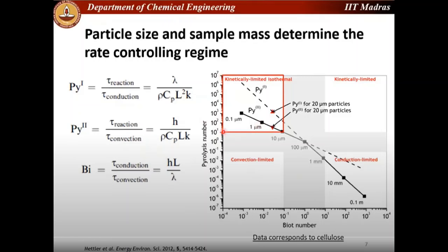Plot of Biot number versus pyrolysis number. Biot number is the time scale of conduction to convection, and pyrolysis number is the time scale of reaction to conduction and reaction to convection.